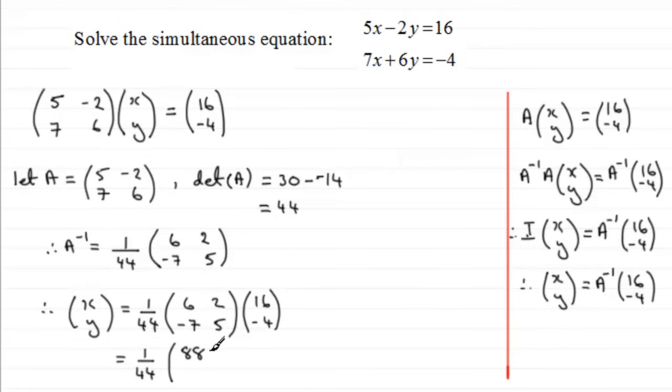Lastly, we do -7, 5 times (16, -4). So that'd be minus 7 times 16, which is minus 112, and then add that to 5 times minus 4, which is minus 20. Minus 112 minus 20 is minus 132.